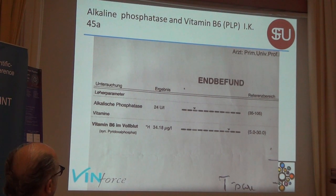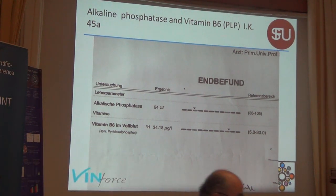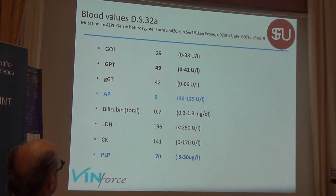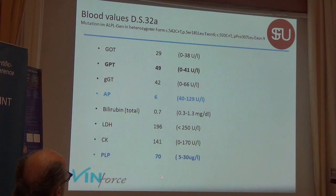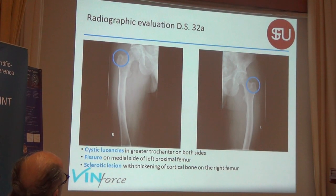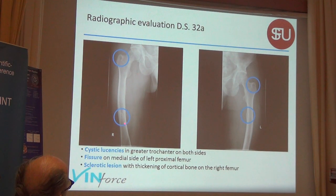For example, this is the alkaline phosphatase of a 45-year-old lady, and her vitamin B6 level is clearly elevated. Another case: a 32-year-old with an alkaline phosphatase of 6 and a three-fold elevated pyridoxal phosphate in the blood. These are typical radiographic signs like cysts, fissures in the shaft, and also sclerotic lesions.